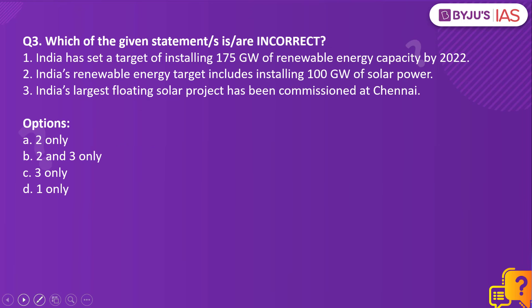Now let us move on to question number three. Which of the given statements is or are incorrect? Statement 1: India has set a target of installing 175 gigawatts of renewable energy capacity by 2022. Statement 2: India's renewable energy target includes installing 100 gigawatts of solar power. Statement 3: India's largest floating solar project has been commissioned at Chennai.